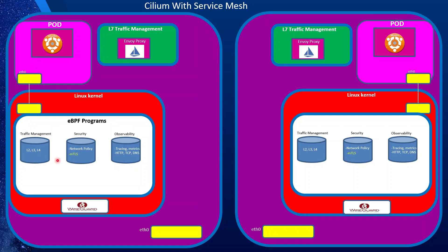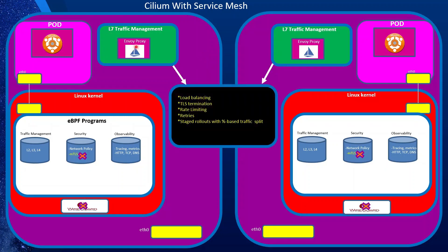Note that mTLS — mutual authentication — is not included in this first release of Service Mesh. I'll talk about mTLS a little bit later in this video. Also, WireGuard is not enabled for L7 traffic. L7 traffic management provides things such as load balancing, TLS termination, and rate limiting — the same as Istio. We will see some of those in action during the first demo.